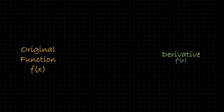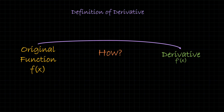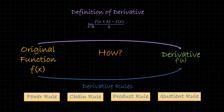We've established that to find the derivative from the original function, we need to do something called differentiation. There are two different ways. The first is using the definition of the derivative. The second, learned after the definition, is to use derivative rules. I'll go over both the definition of the derivative and the derivative rules in their own separate videos, since they'd run a bit long if included here.